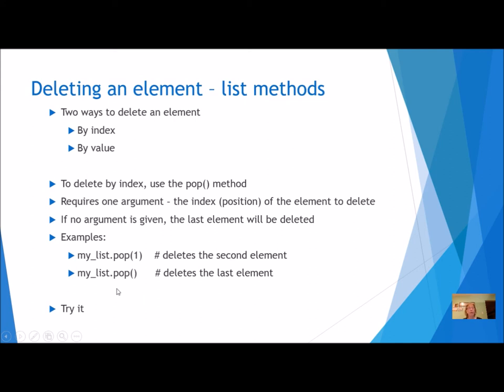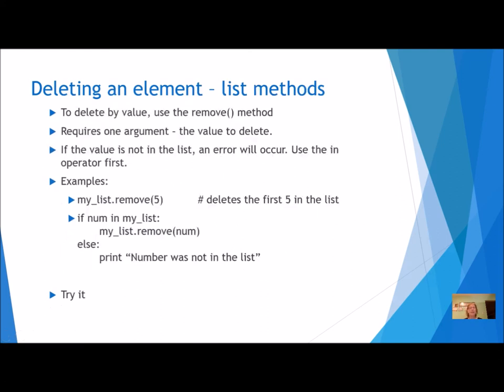To delete an element from a list by value, if I know what number I want to delete but I don't know where it is, I'm going to use remove. Remove requires one argument - the value itself. It doesn't really care where it is, it's going to do the work for you. It's going to see if it's in there and then remove it.